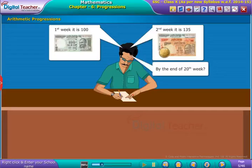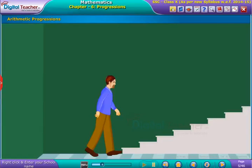To understand arithmetic progressions, let us consider a real-time situation of climbing steps one by one. A man climbs the steps one by one by counting.